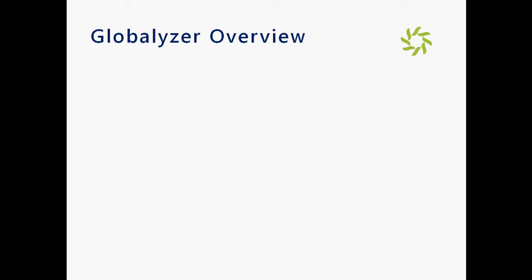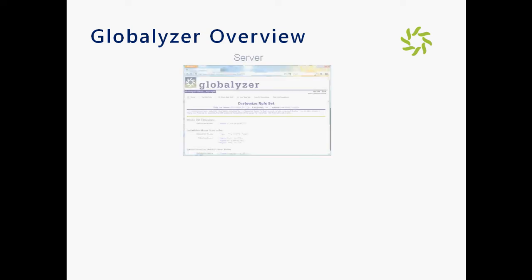Globalizer has three main components. The server holds rule sets used to scan source code with the other components. A rule set contains i18n detection and filtering rules for a programming language, such as Java or C-sharp.